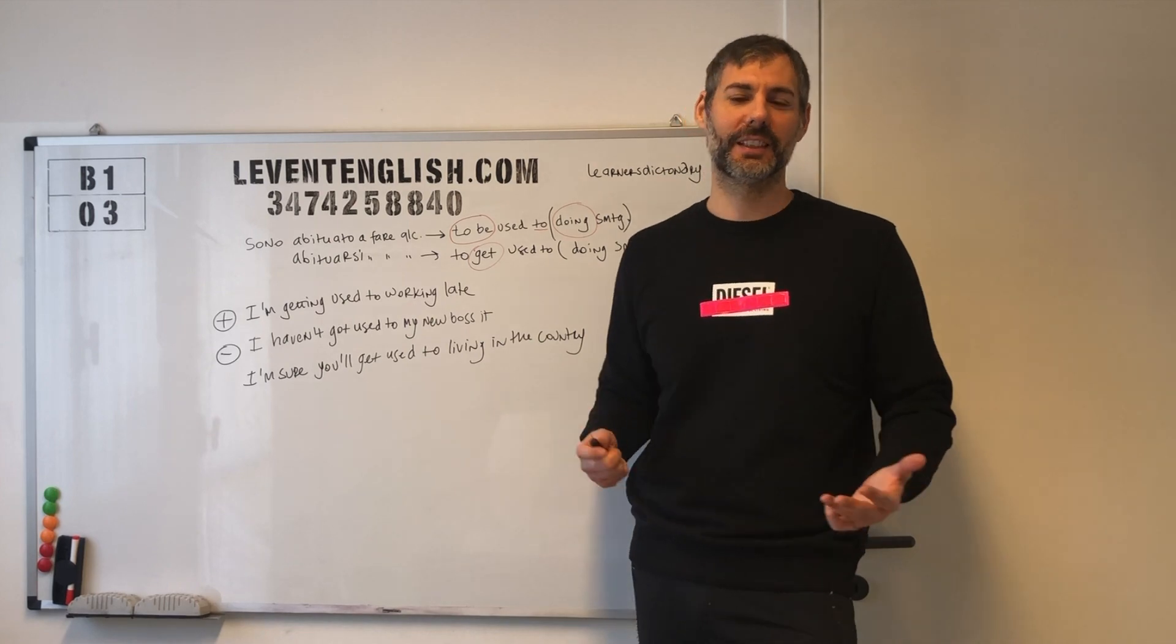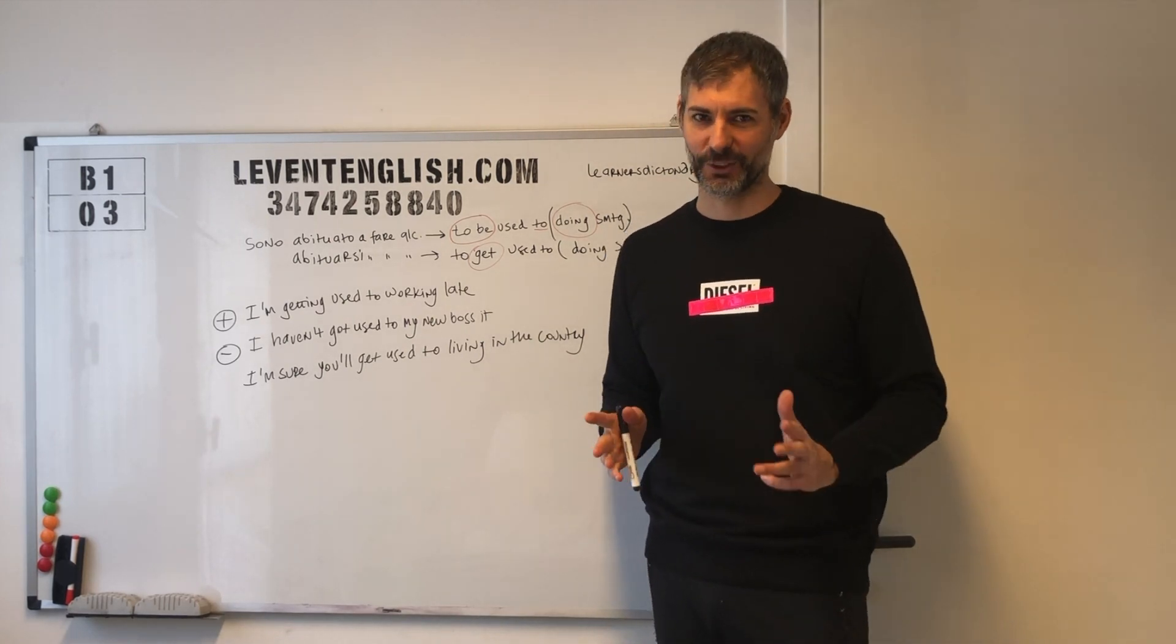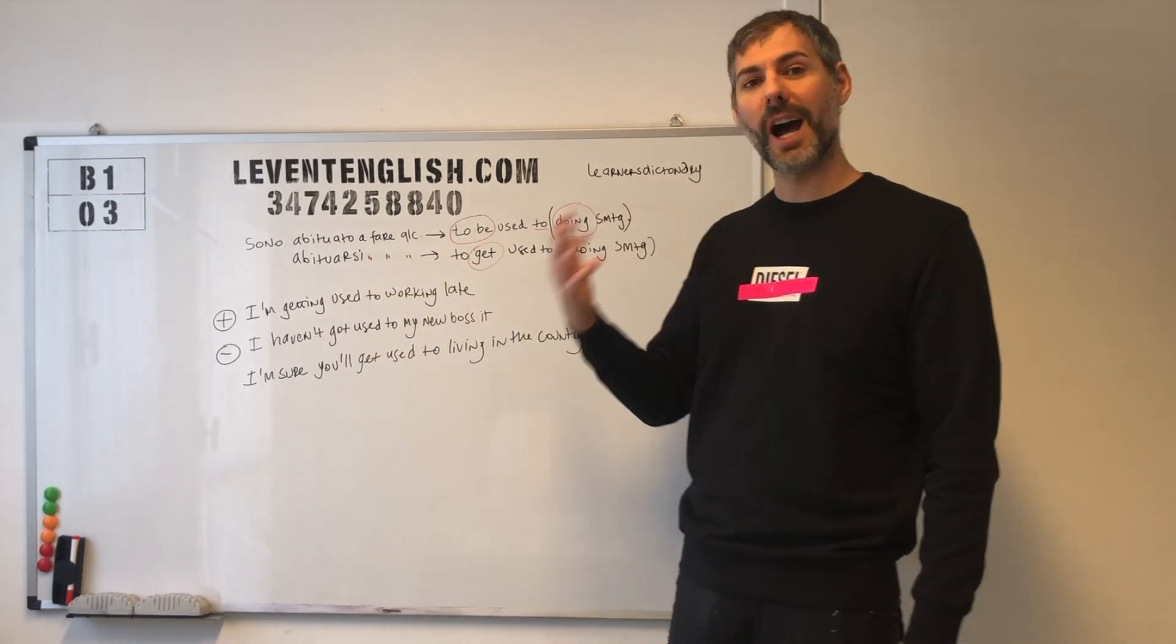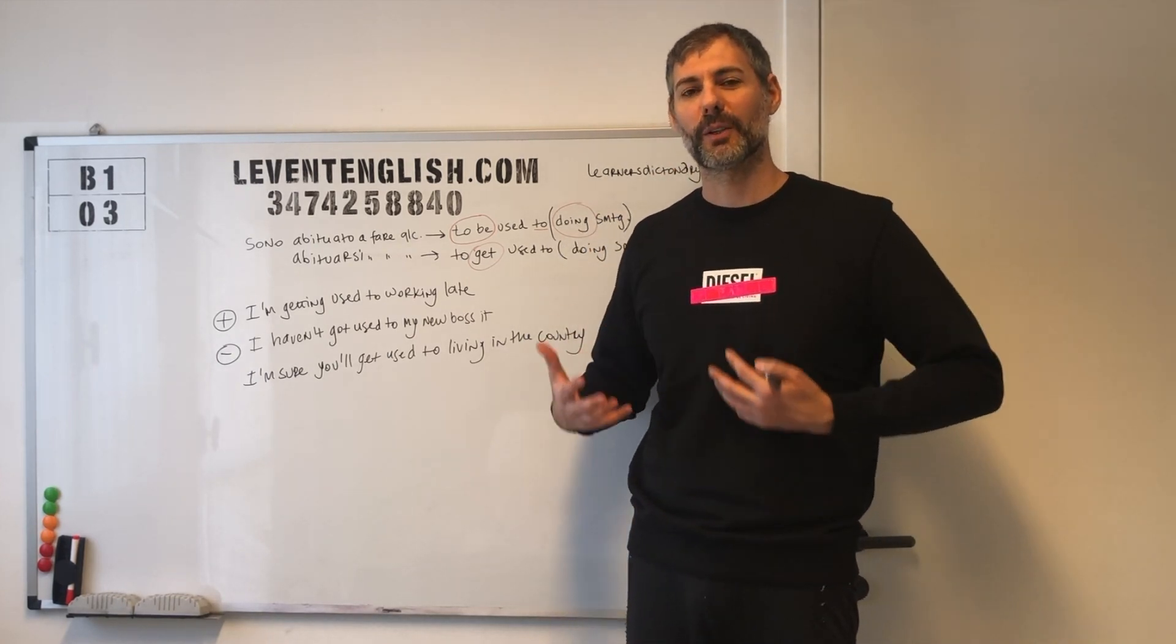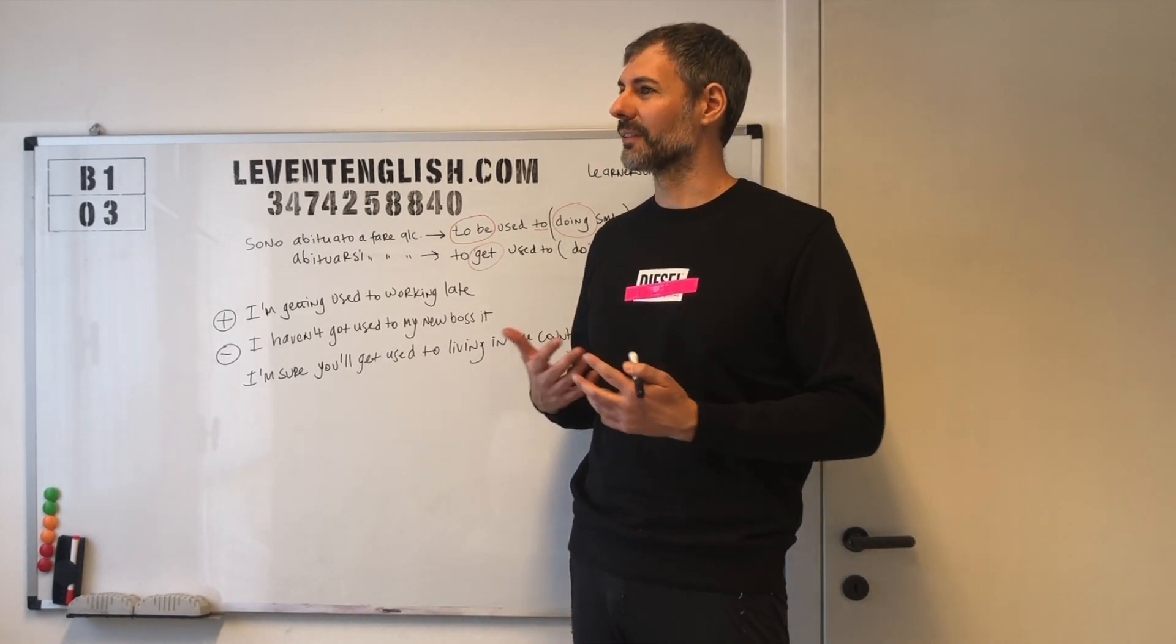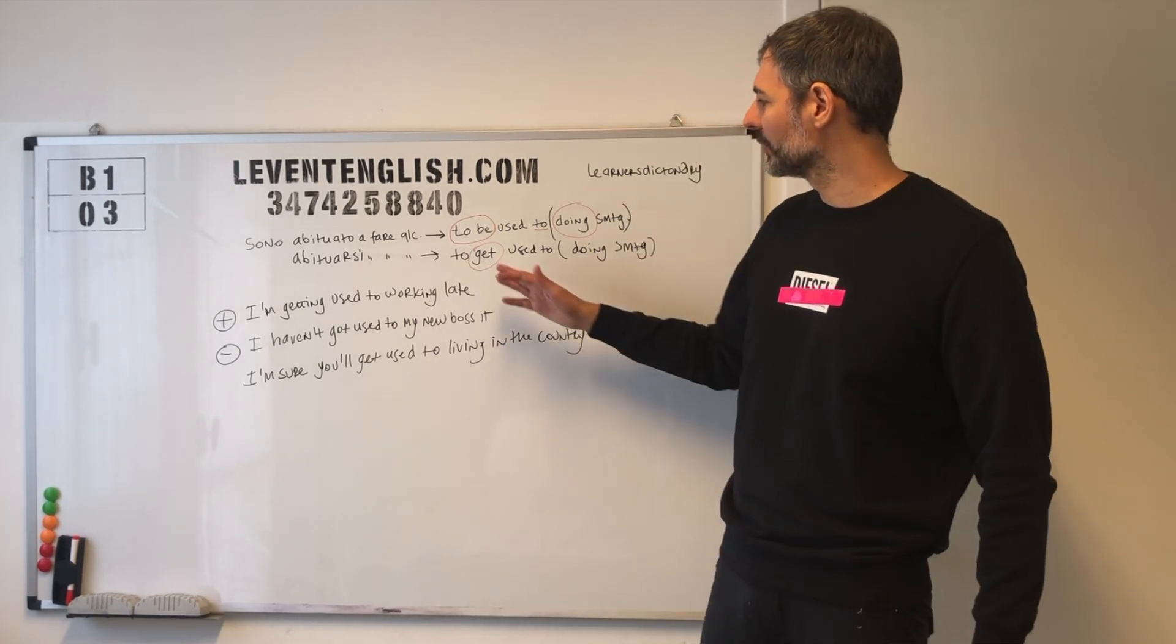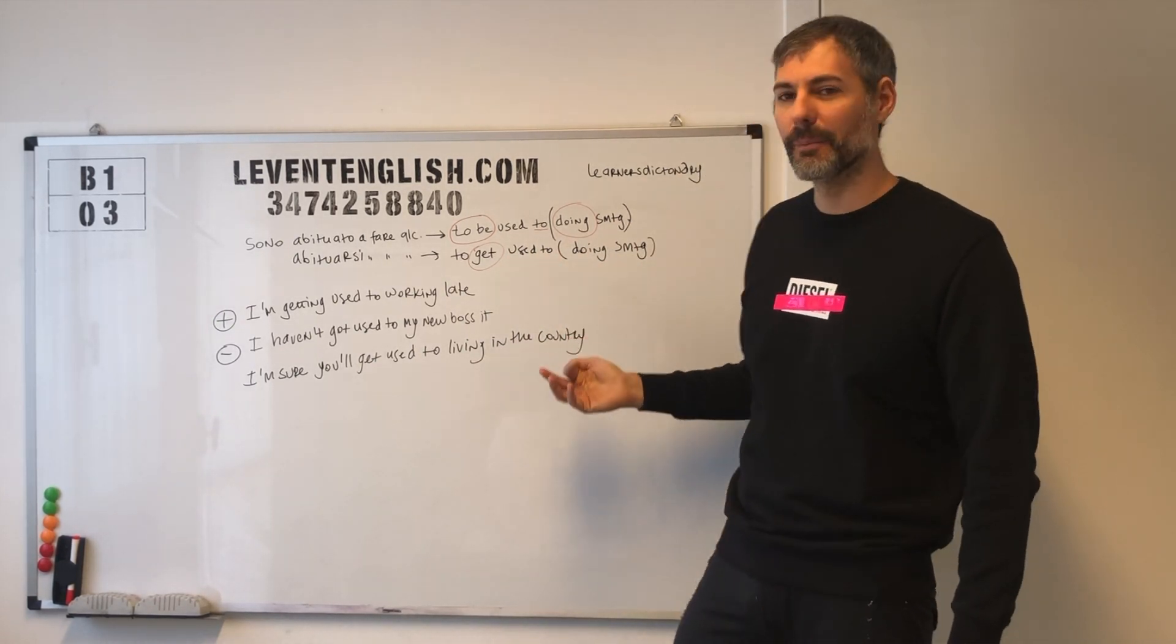Se fate questa forma con l'infinito, sarà sbagliata. È chiaro che mi capiscono, però, anche se io vado al supermercato e dico fame, pera, mi capiscono, però non sto parlando bene. La seconda struttura che abbiamo visto è abituarsi. Quando io voglio raccontare che piano piano c'è un percorso di familiarizzazione con qualcosa, mi sto abituando, si usa get, to get used to doing something. Per esempio, you are getting used to listening to me.